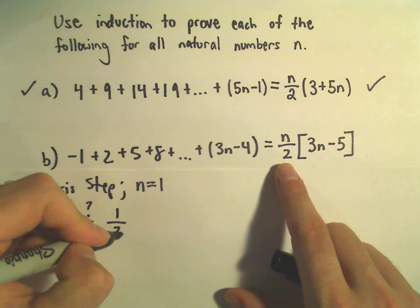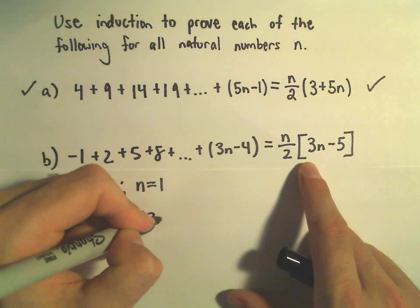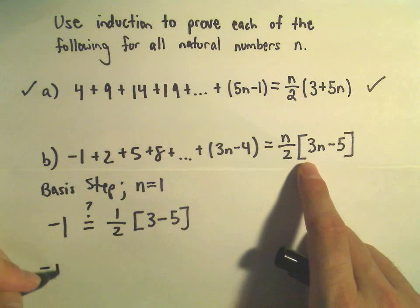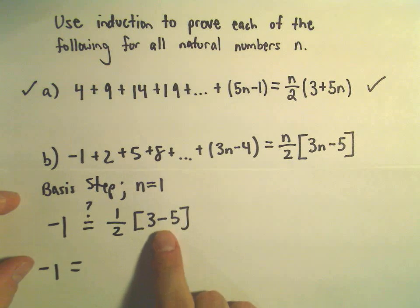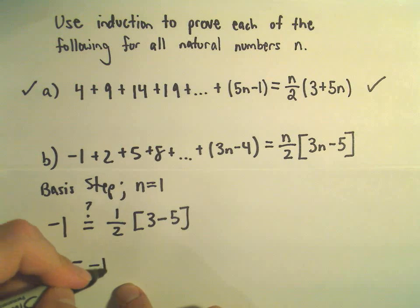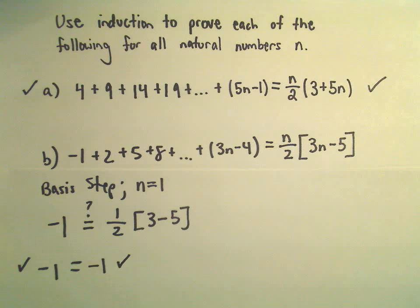and again I'm asking myself are these equal, that's what I'm trying to verify, we'll get 1 over 2, looks like we'll get 3 minus 5. Well on the right, in the brackets, 3 minus 5 is negative 2. Negative 2 times a half is negative 1. So the basis step is correct, is valid.